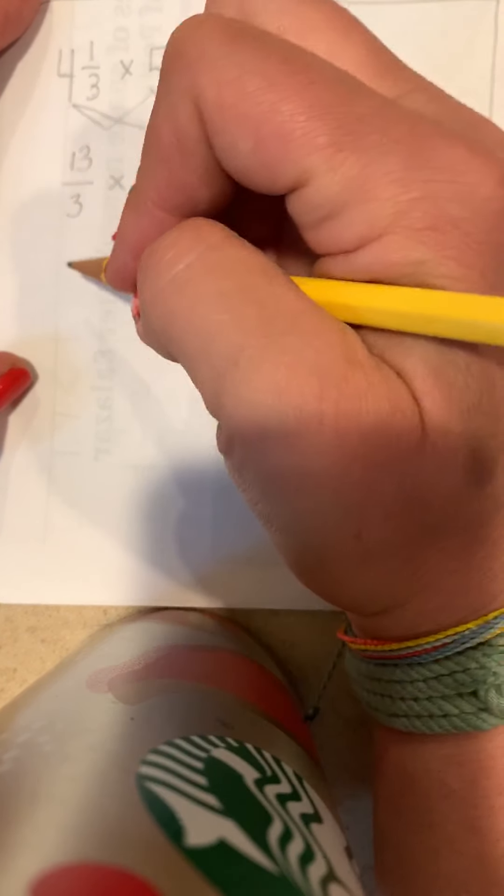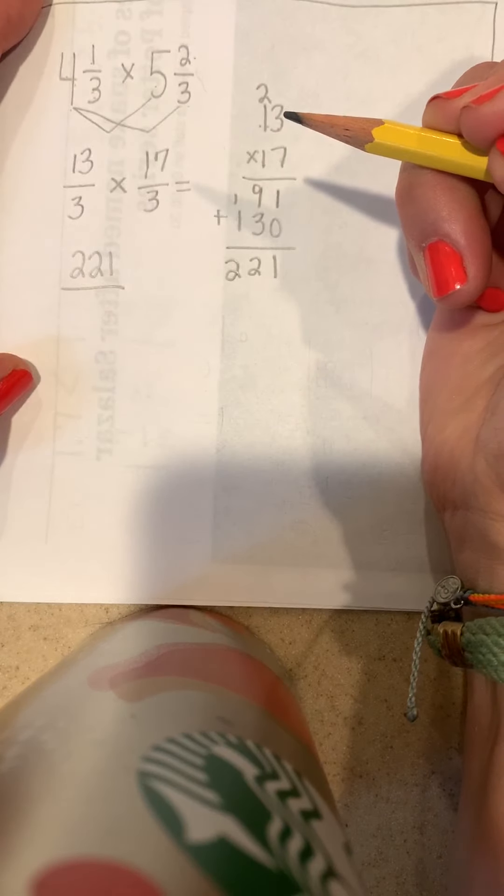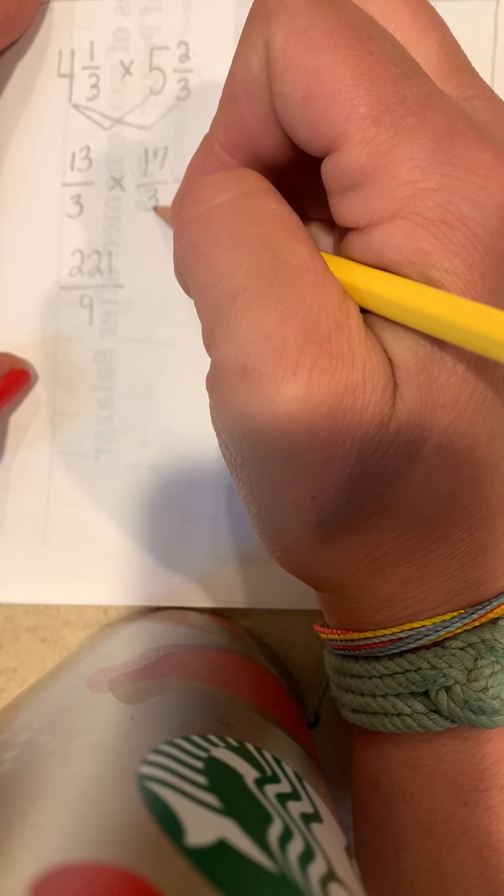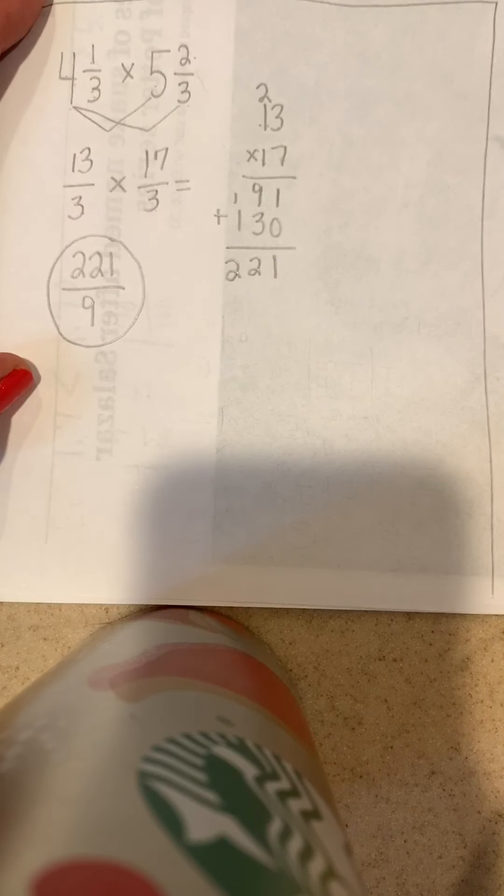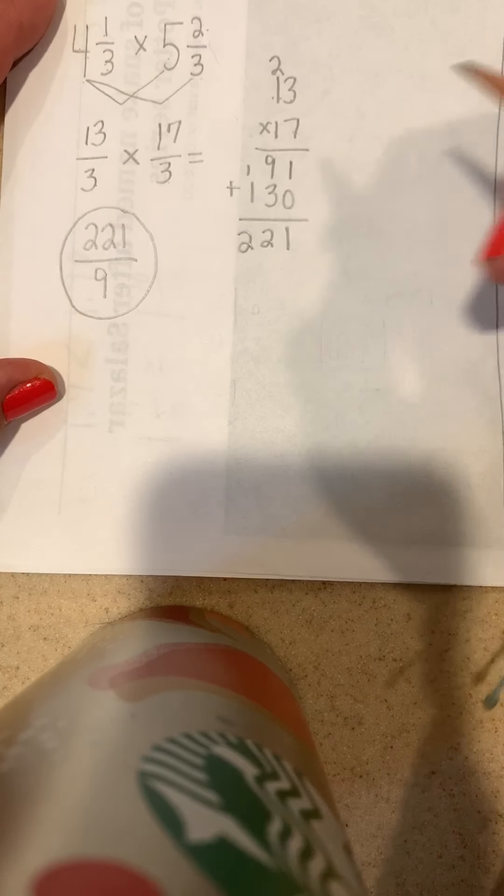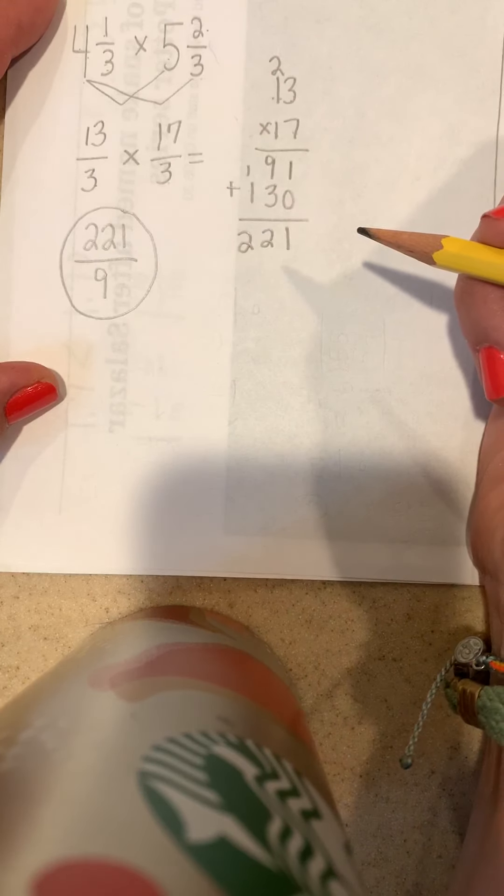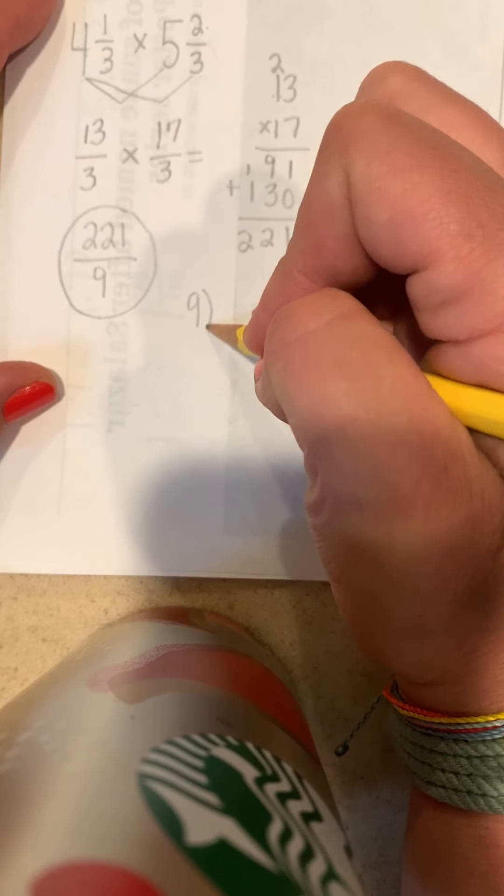I'm gonna combine my work and the top of this numerator is 221 over 9. 3 times 3 is 9. I now have a new fraction, it's improper. We never want to leave our fractions improper so this is what I was saying, it's a multi-step problem and that's okay, we're just gonna take the time to do it.